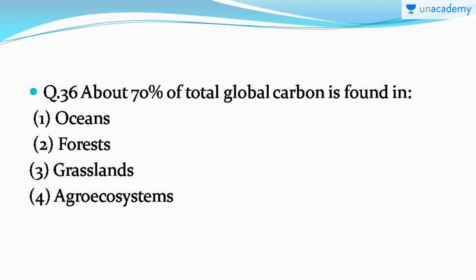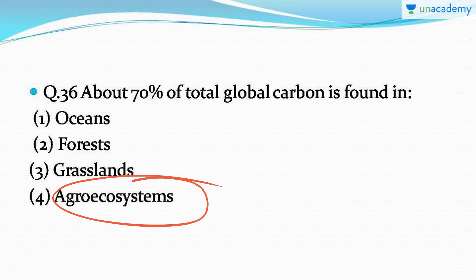Question number 36: about 70 percent of total global carbon is found in — it's a very easy question. The correct answer is option number one: oceans. Oceans contain 70 percent of total global carbon — neither forests, nor grasslands, nor agro-ecosystems contain this much carbon. They store carbon in the form of living beings and dead matter present in the oceans.